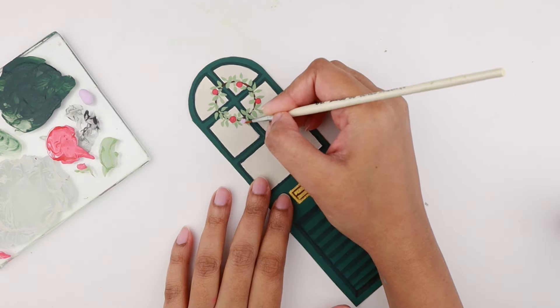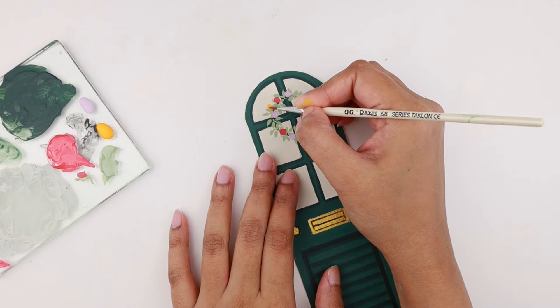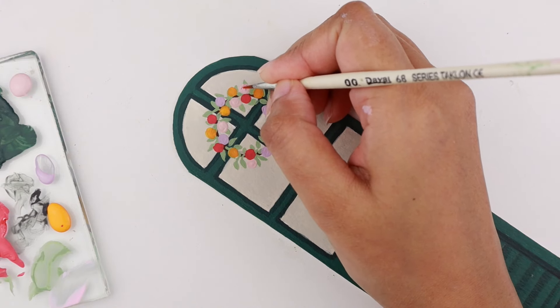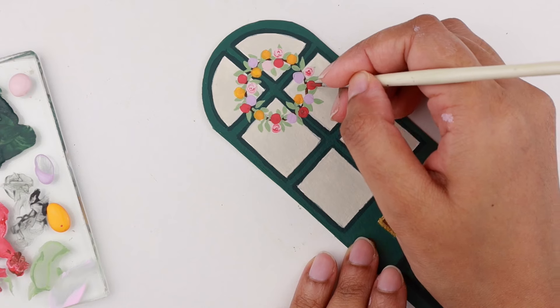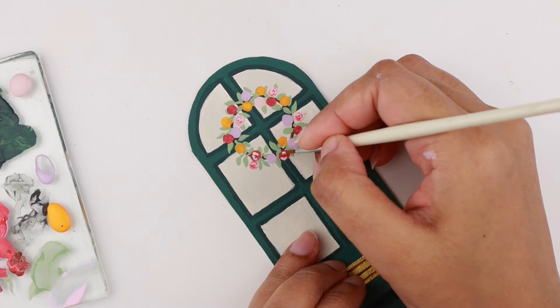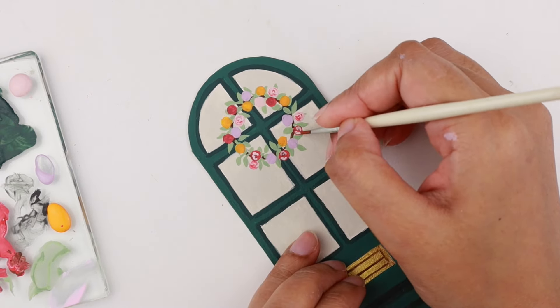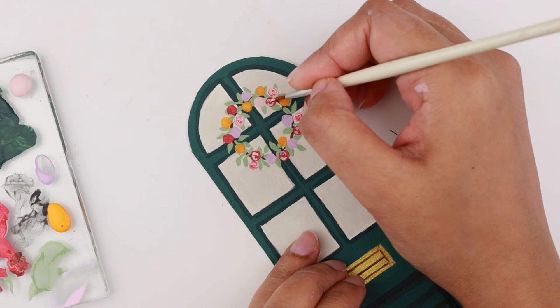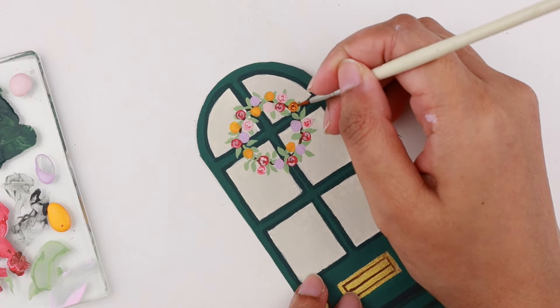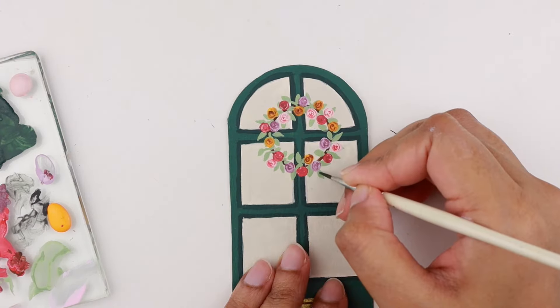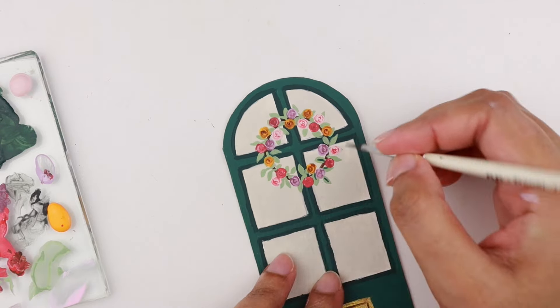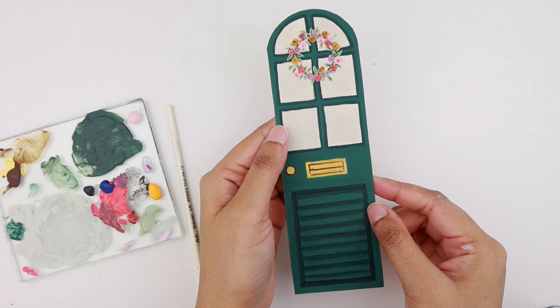First, I'm just painting small dots with these colors. Then I'm painting tiny spiral circles on them to define the petals. For the finishing touches, I'm taking a dark green paint and defining the midrib of the leaves. This completes our door-shaped bookmark.